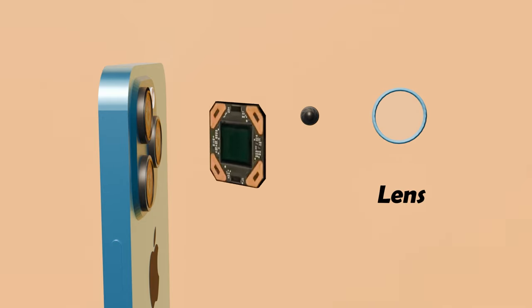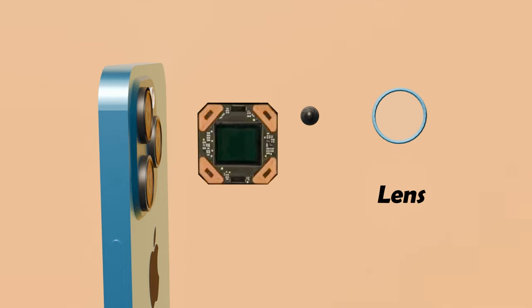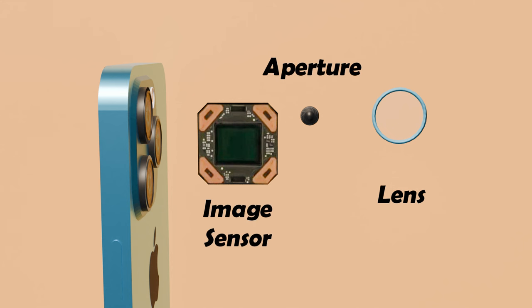The lens is responsible for focusing light onto the image sensor, much like the lens of a traditional camera. The lens on a mobile phone camera allows light to enter and hit the image sensor. The aperture, like the pupil in our eyes, controls the amount of light that passes through the lens.